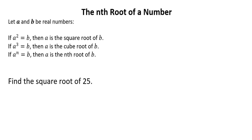The nth root of a number. Let a and b be real numbers. If a raised to 2 is equal to b, then a is the square root of b. If a raised to 3 is equal to b, then a is the cube root of b. And if a raised to n is equal to b, then a is the nth root of b.